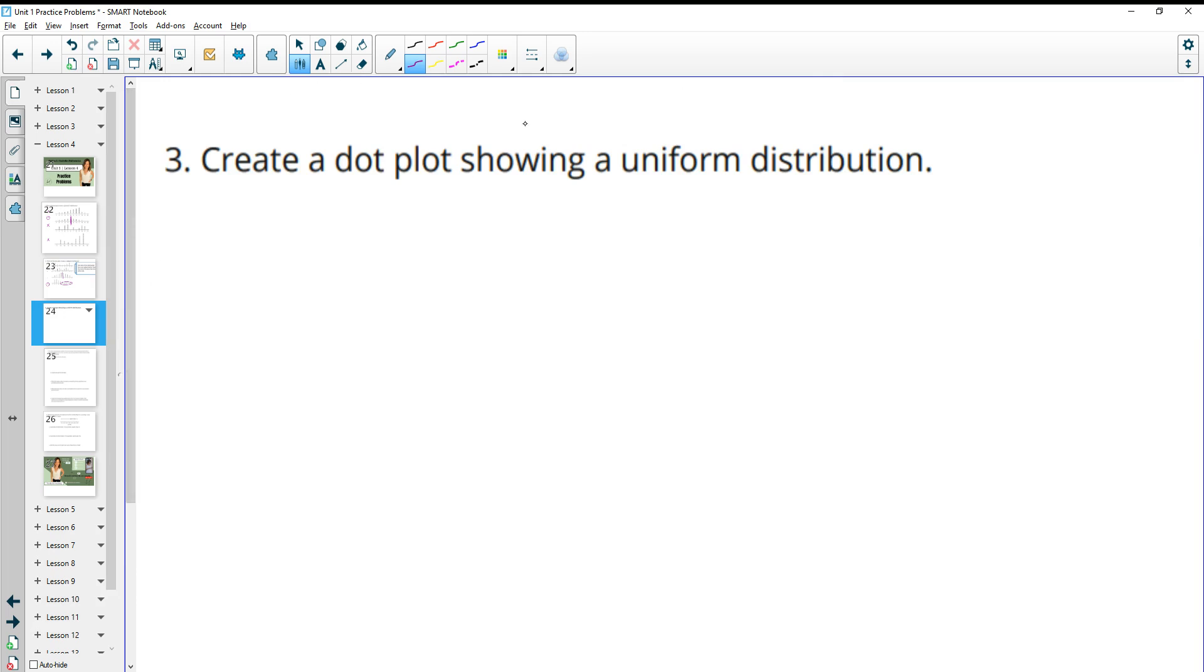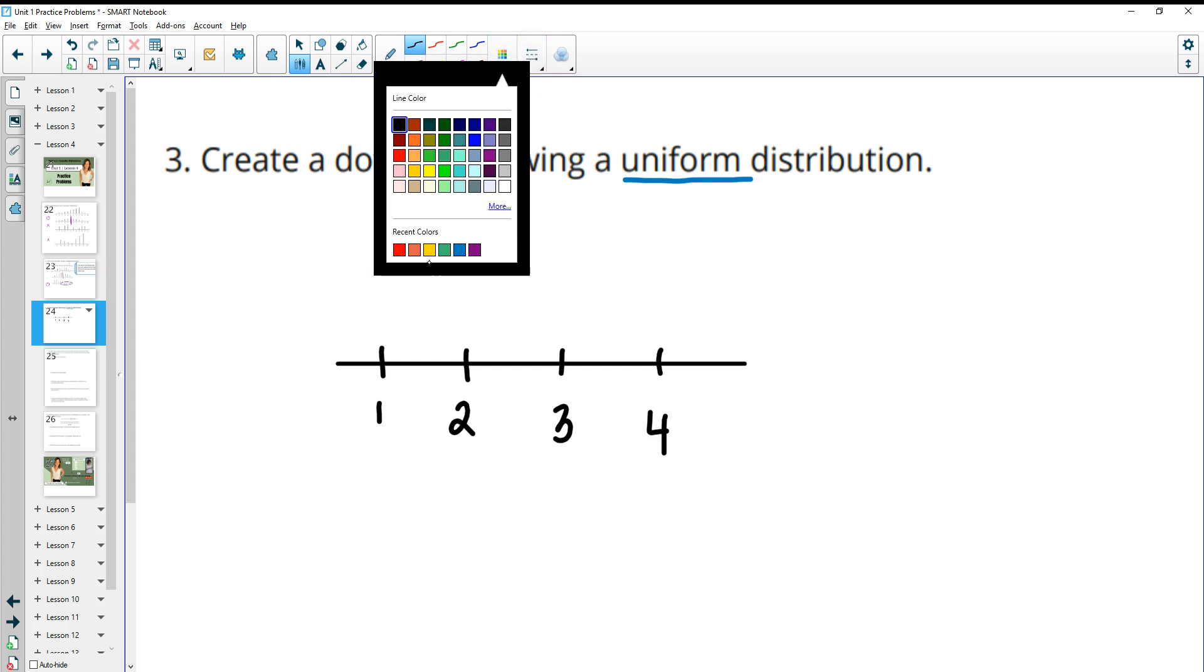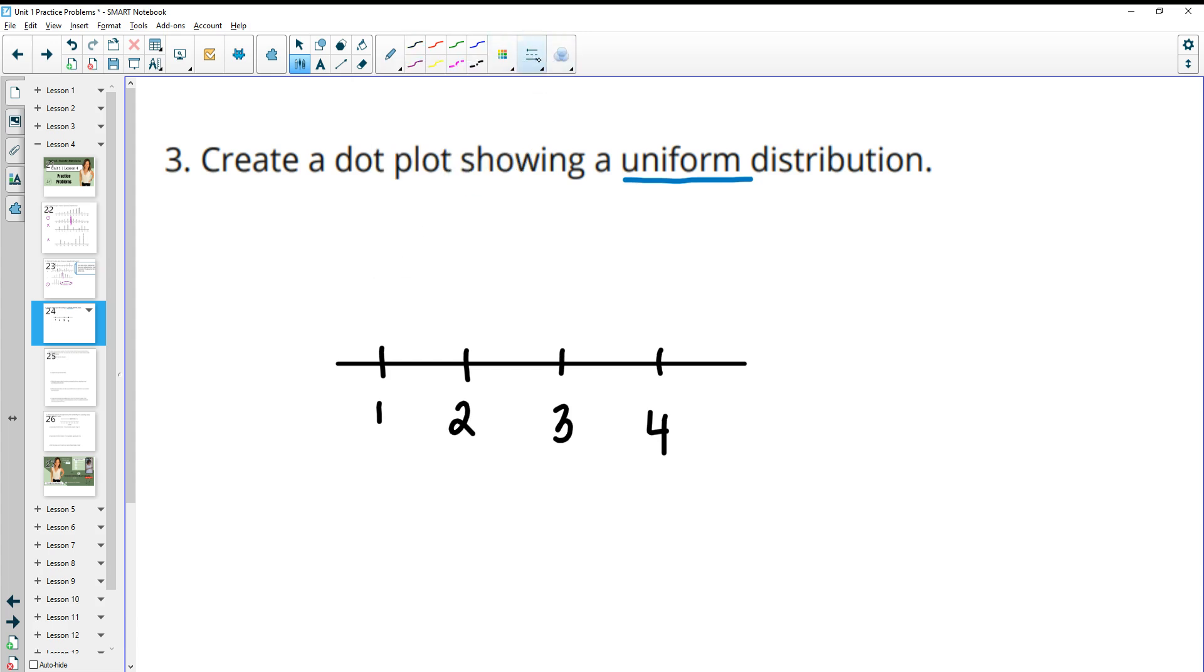Number three, create a dot plot showing a uniform distribution. So uniform distribution means that all the data points are there the same amount of times. So you get to create whatever you want. Don't create exactly what I'm creating here, but you can do something similar. So I'm just going to pick the numbers one, two, three, and four. You could do as many numbers as you want here and whatever numbers you want. And then the data points are going to be there the same amount of time. So I'm just going to do three in each one. And this would be uniform data where everything is there the same amount of times.